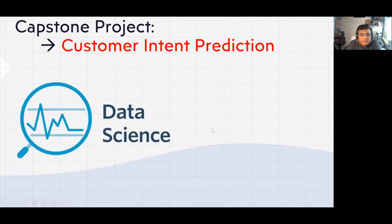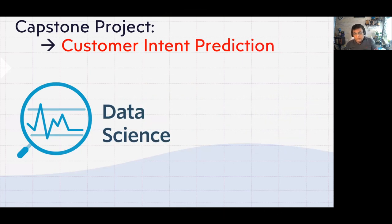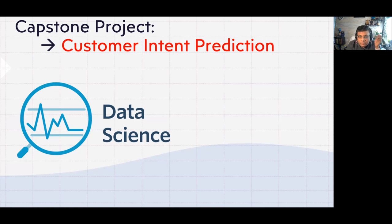I'll talk about one case study today — customer intent prediction. This is already done for Amazon and many leading retail customers, so you can coordinate this with your industry as well. The idea is that the customer is everywhere and we all deal with customers only. This gives you a glimpse of how data scientists think and what steps are required to provide better business outcomes and better services to the customer.